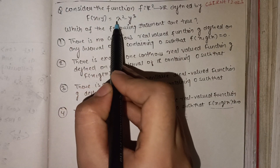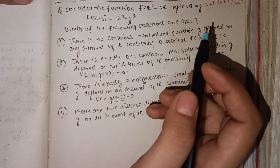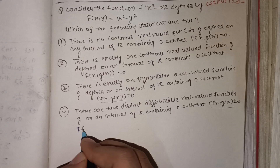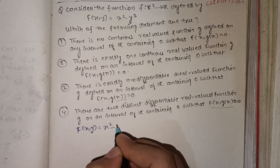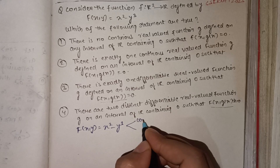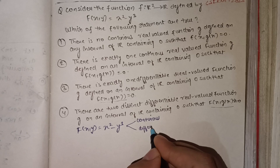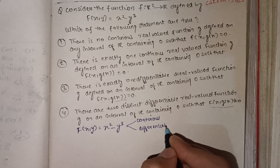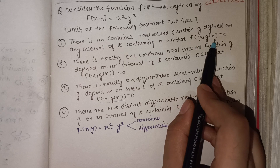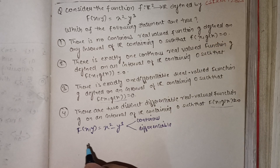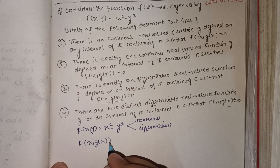The given function f(x,y) = x² − y³ is a continuous and differentiable function. Now we have to check the function f(x, g(x)), so we set f(x, g(x)) = 0.